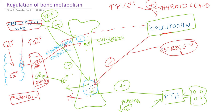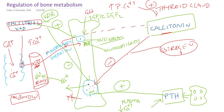Growth hormone also favors bone formation — it can stimulate osteoblast through a mediator called insulin-like growth factor 1 and insulin-like growth factor 2, and it also favors bone formation. Whereas glucocorticoids actually inhibit osteoblast.